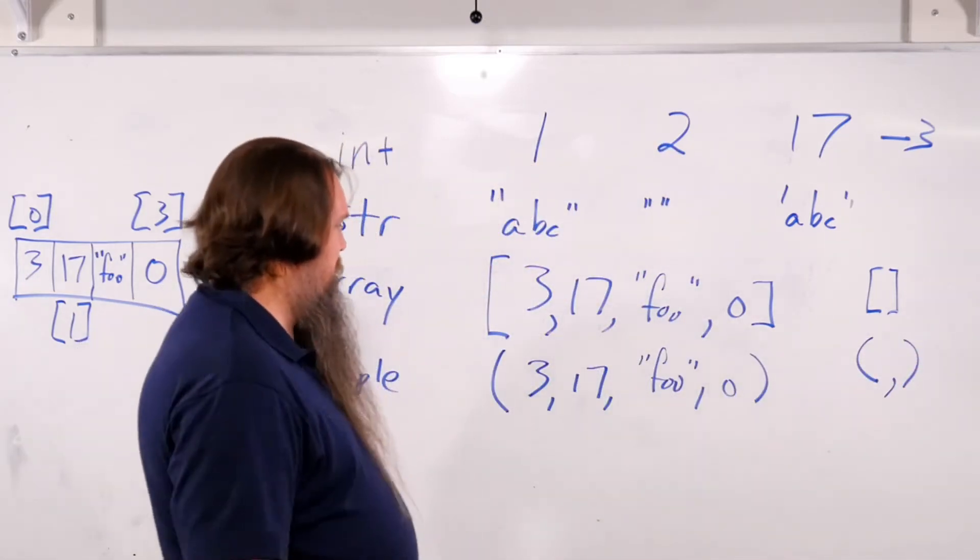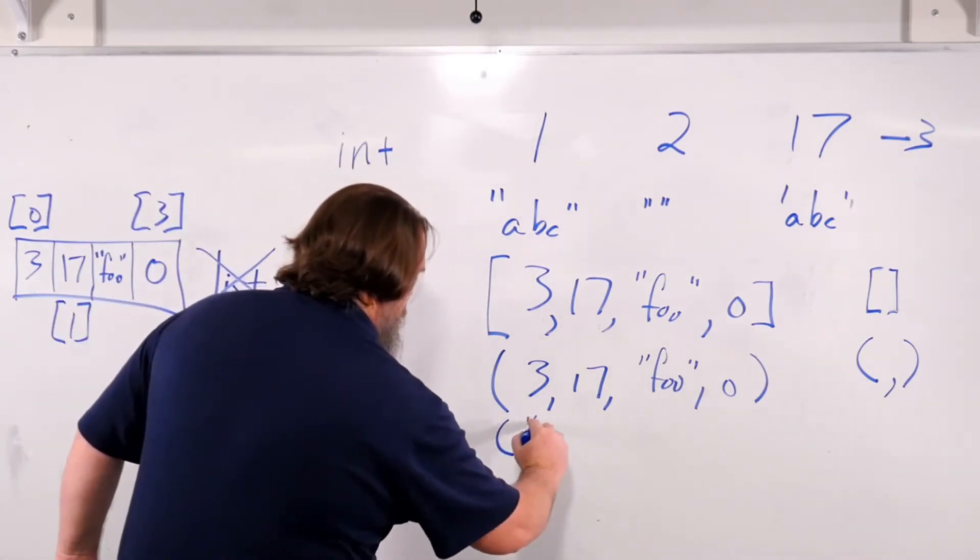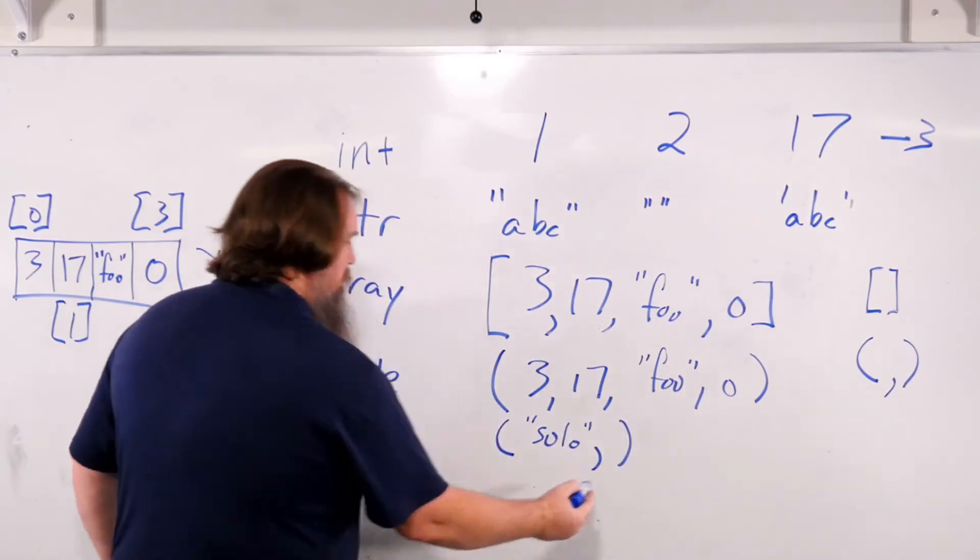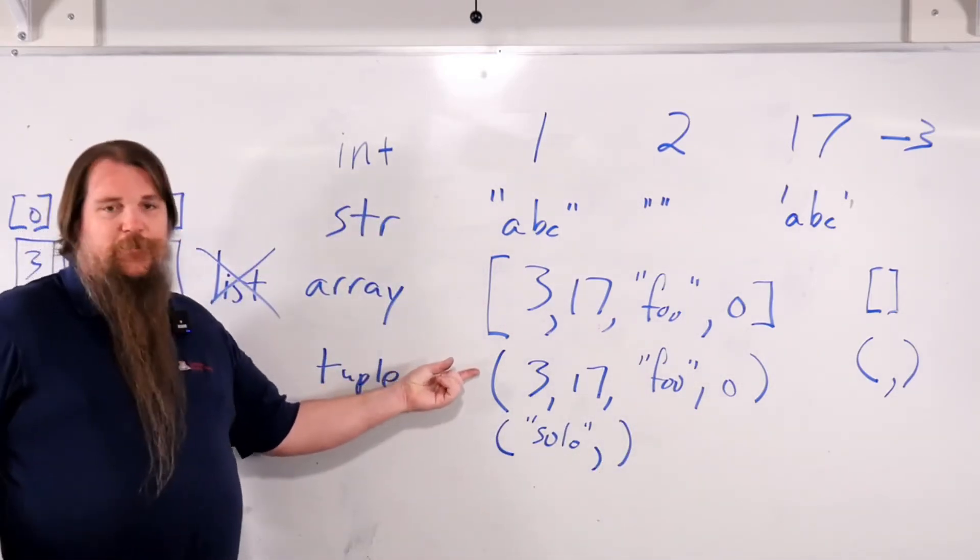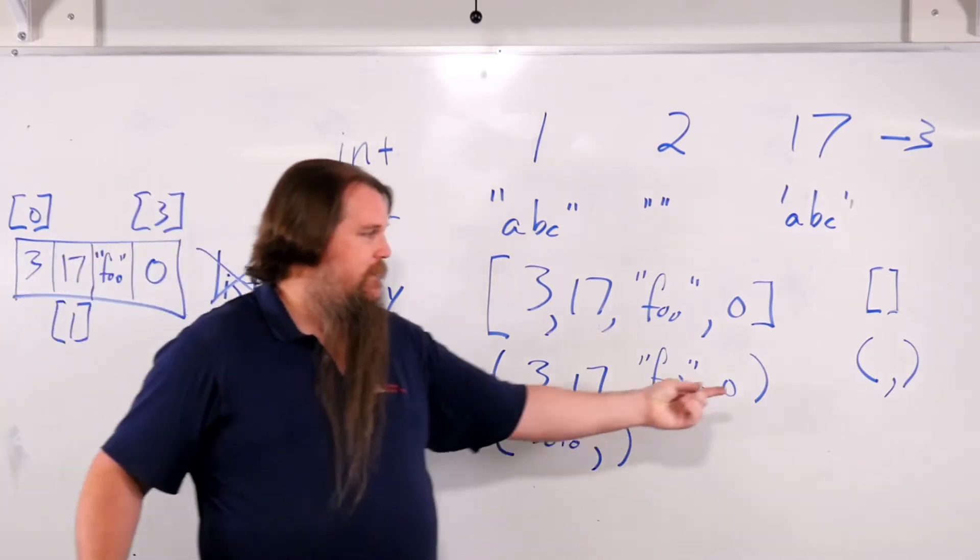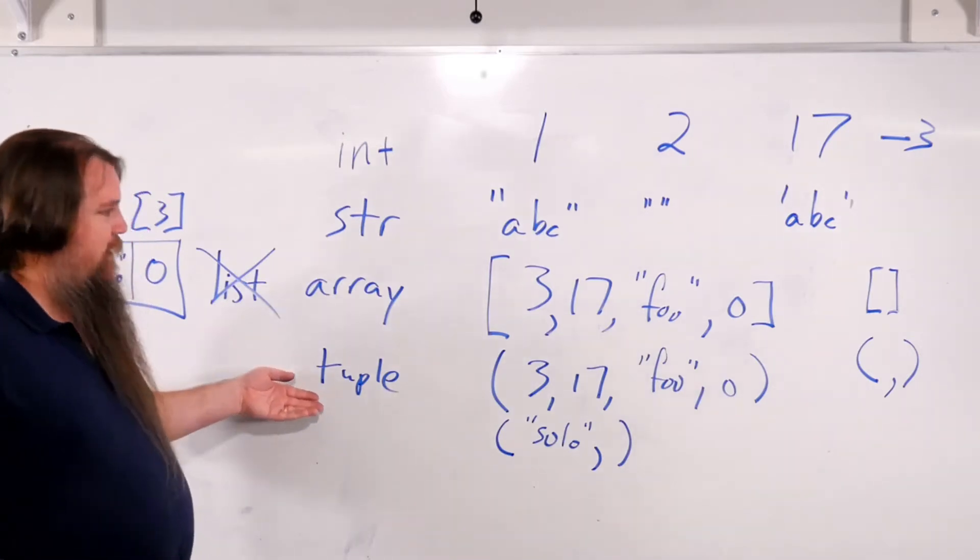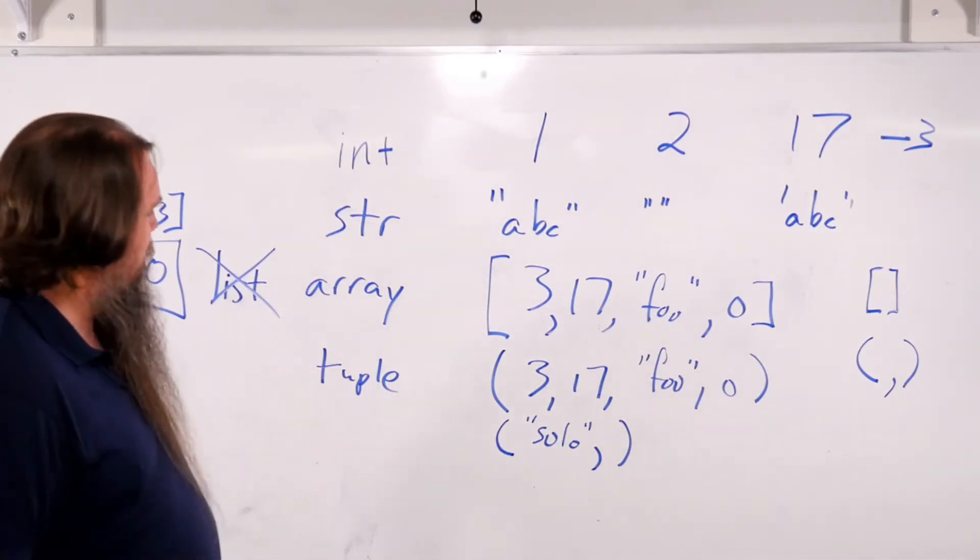If you want to have something that has exactly 1 element, you can say string solo comma. So this is a tuple with 1 element. This is a tuple with 4 elements. This is a tuple with exactly 0 elements. So this works exactly like an array except that you can't change what's inside of it.